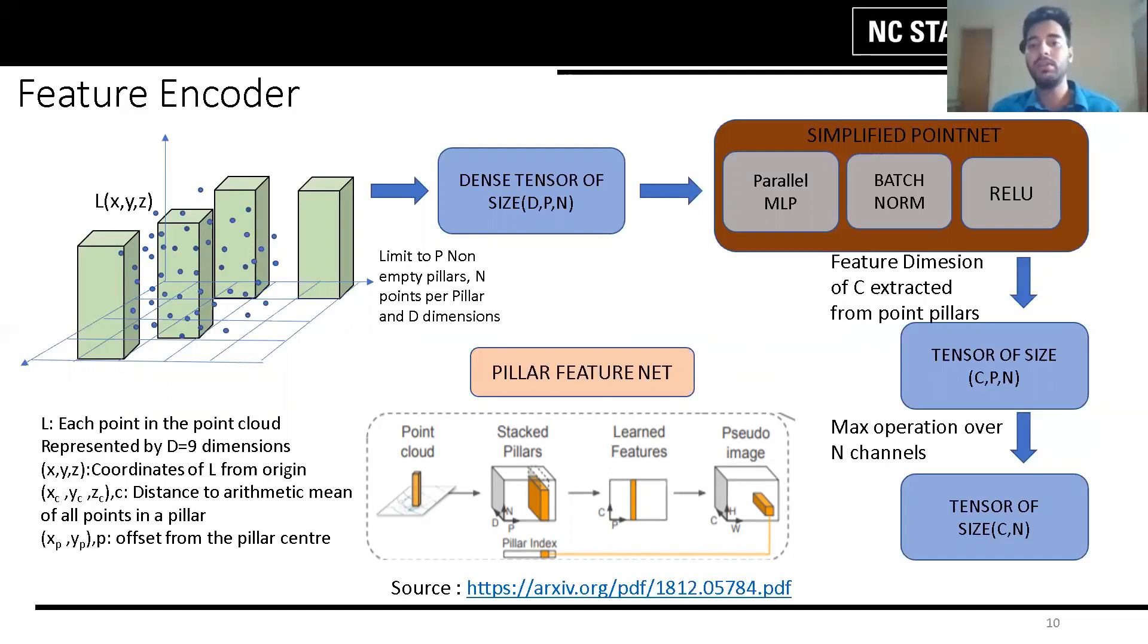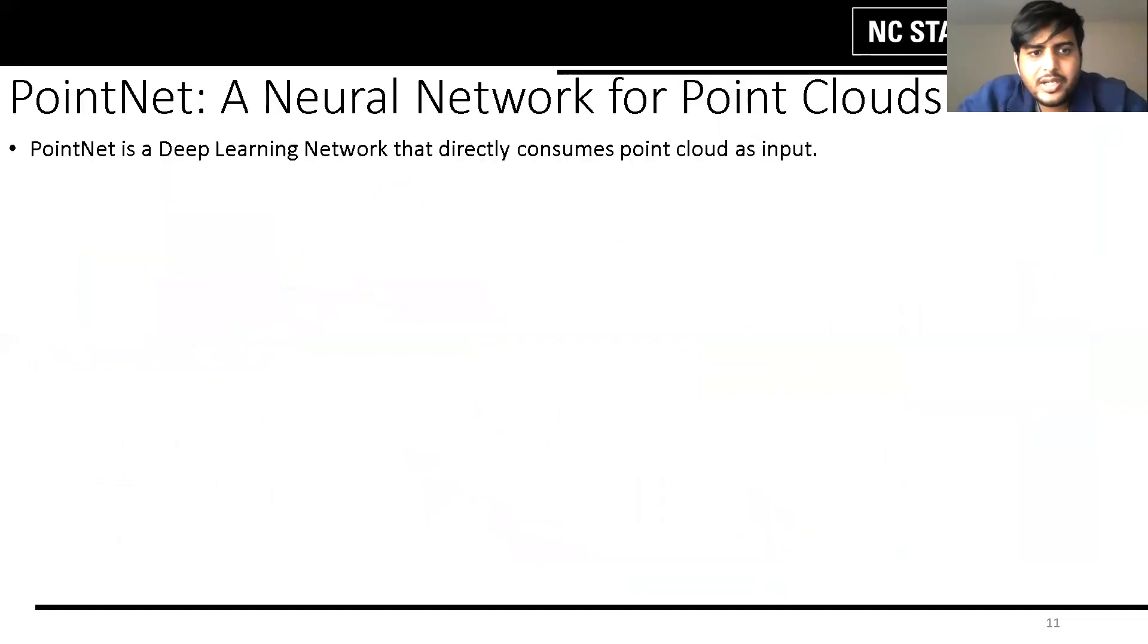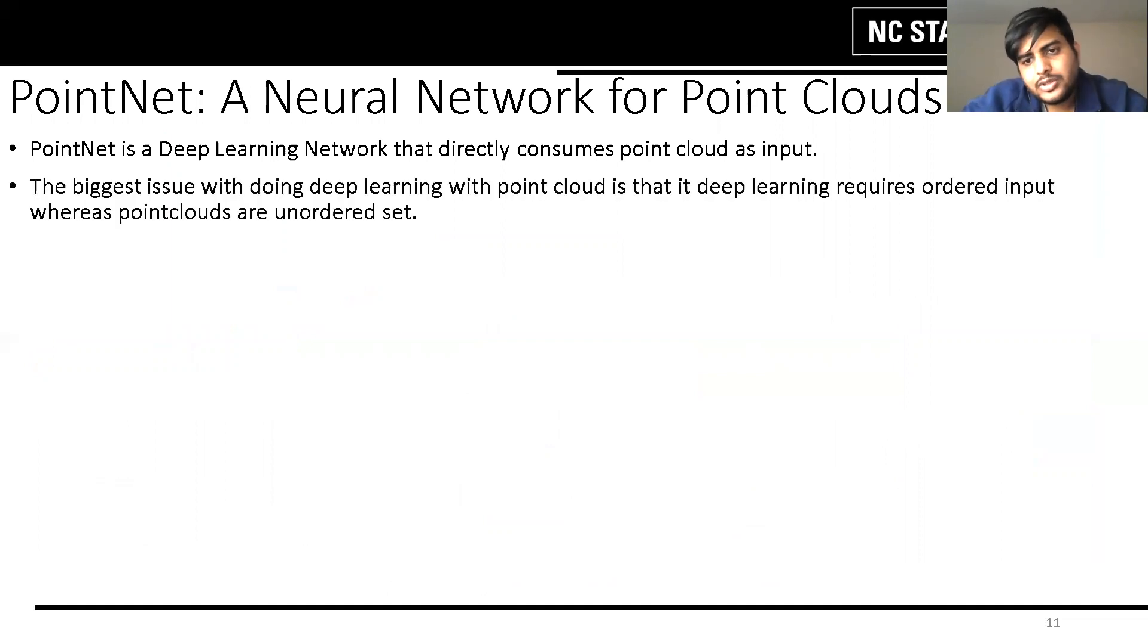Now Abhishek will delineate the working of the pre-trained PointNet-based encoder. PointNet is a deep learning neural network architecture which takes in the point cloud as input. Point clouds are basically unordered data sets and the issue with this kind of data set is that when you try to process this through a neural network, since it requires ordered data set, it fails to perform optimally.